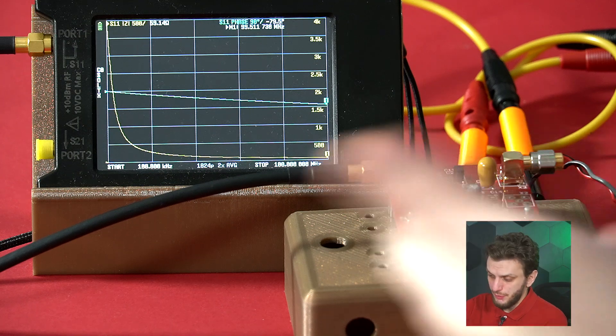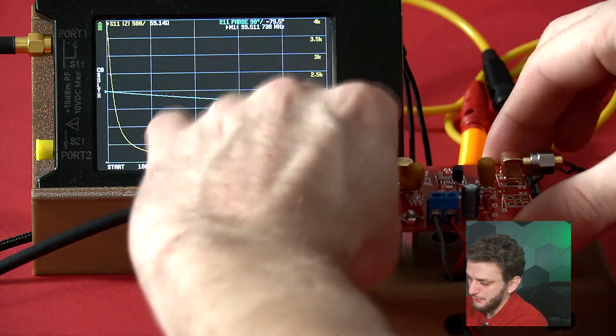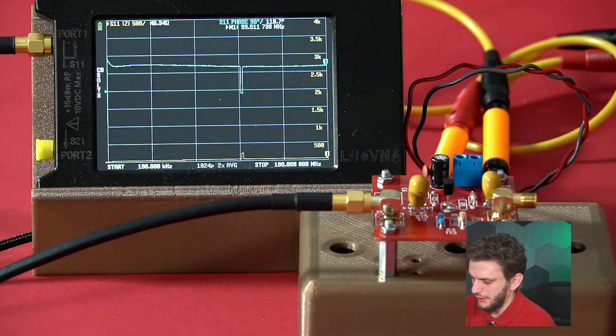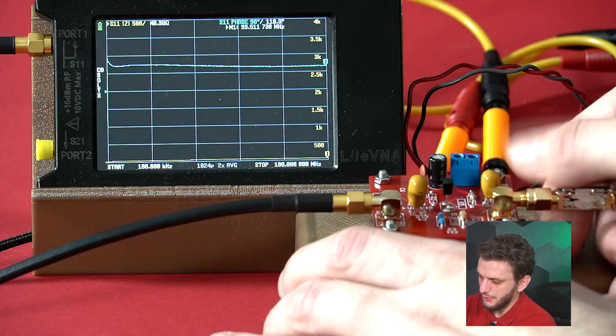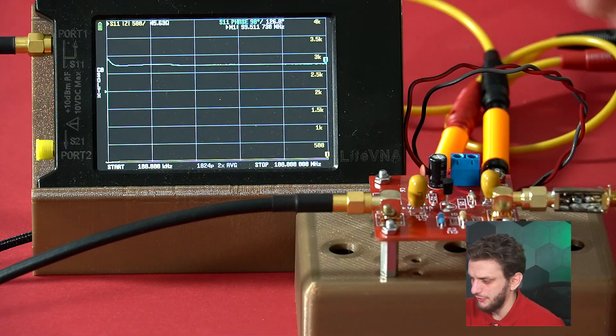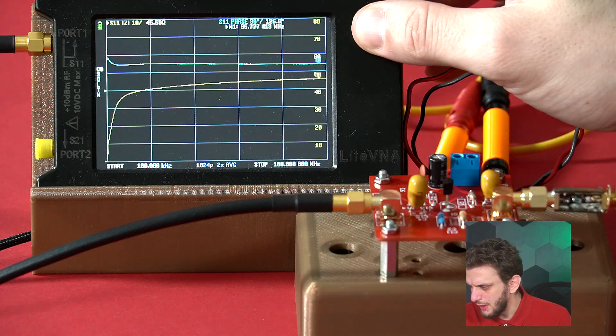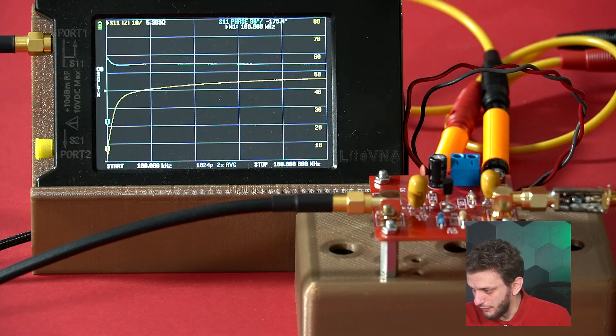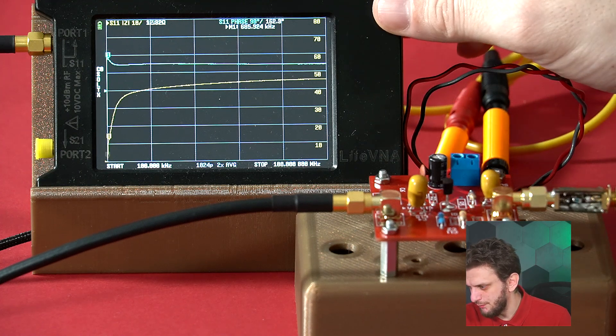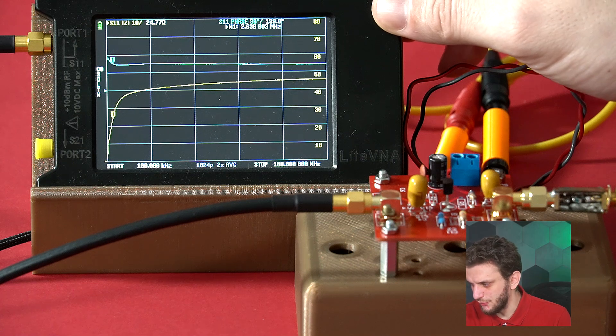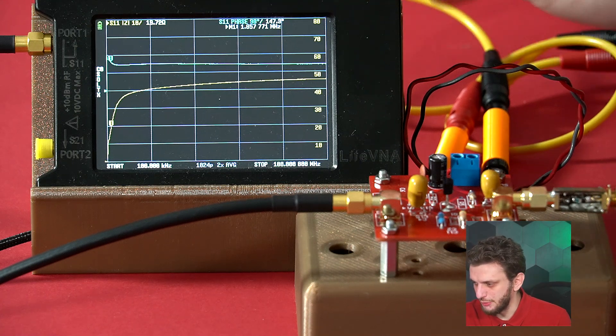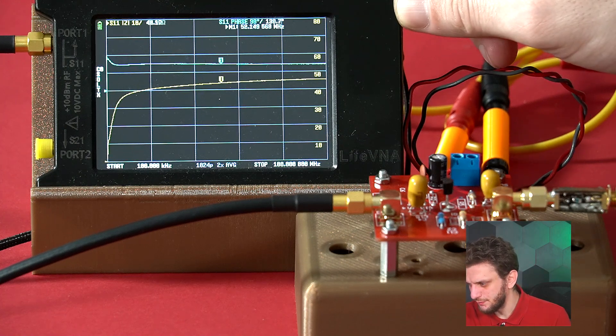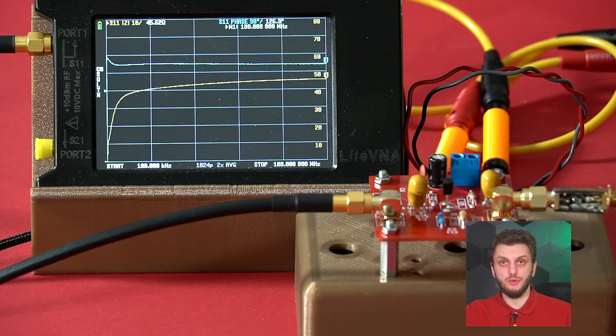To measure the output impedance, we can perform the same measurement, just swapping the measurement point to measure the output of the amplifier, and I will also connect a 5 kOhm load on the input, just so that both ports are defined. If I change the scale a bit, we can observe that the output impedance starts at a very low value of about 5 ohms at 100 kHz, and this slowly increases with frequency. At 1.8 MHz, we are at about 20 ohms, 30 ohms at 3.7 MHz, and so on. Even at 100 MHz, we're at about 45 ohms.